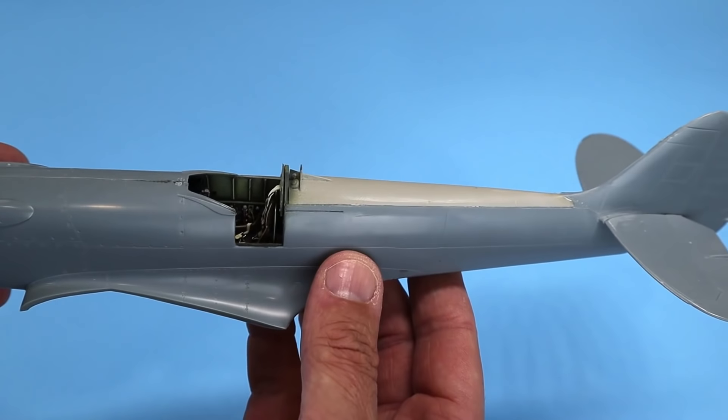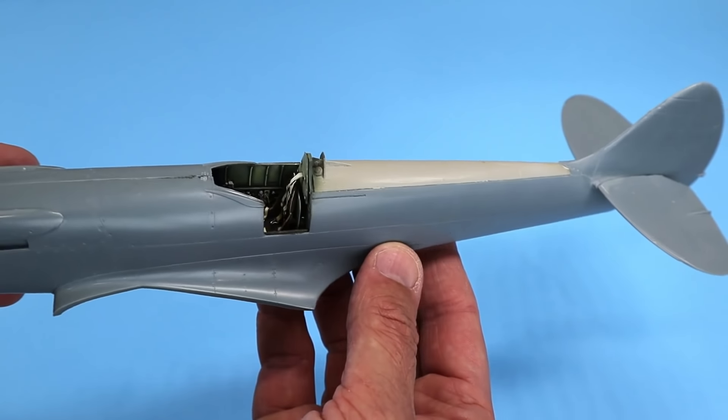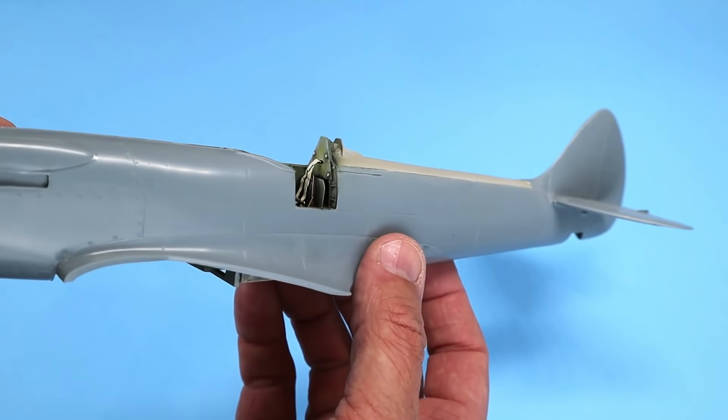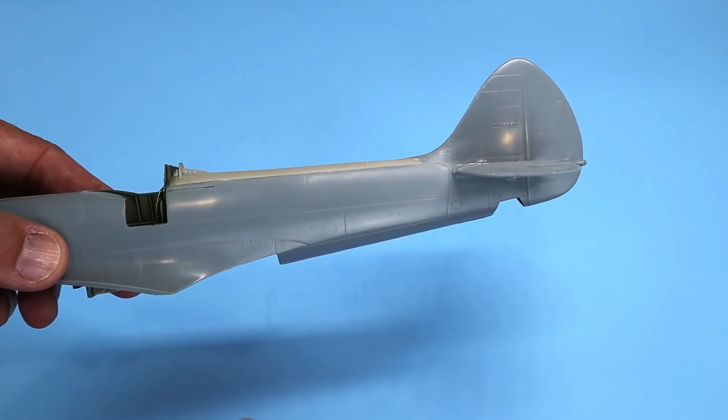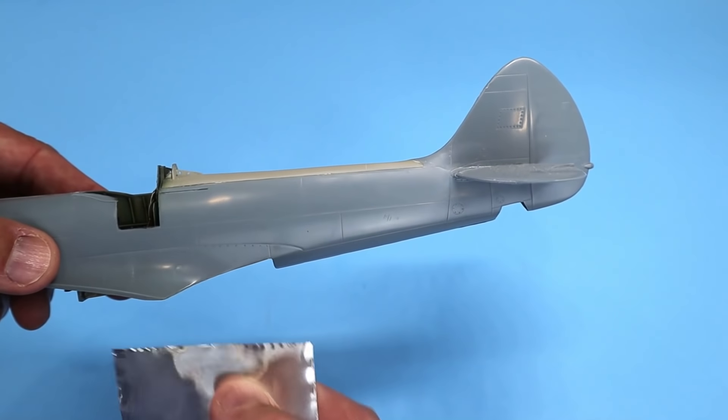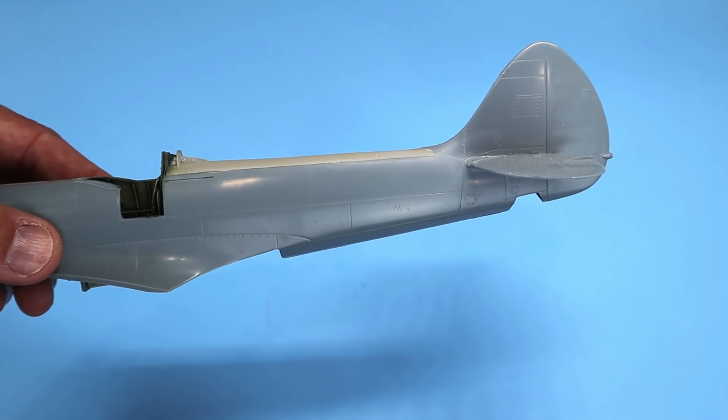But in order to demo real quickly how to achieve these effects, I'll use this 1/32nd scale Spitfire. Now the first thing you'll need to do is to either create a template to cover the area that you want to recreate the raised metal effect on, or...